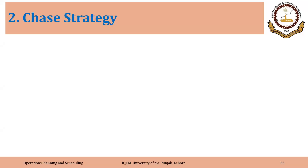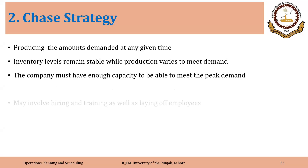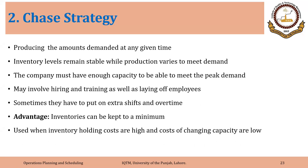The second type of production strategy is chase strategy. Chase strategy is producing the amounts demanded at any given time. Inventory levels remain stable while production varies. So it is just the opposite of level strategy.